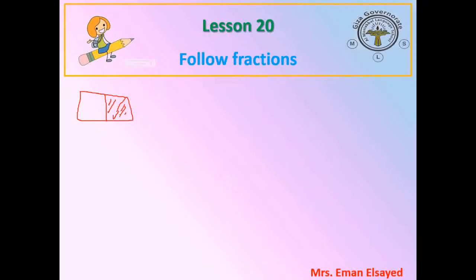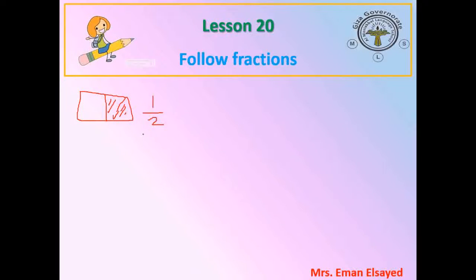What is the fraction of the shaded part? What is the shaded part? One out of two. How many parts? One and two. The total part is two down. The fraction is half — one out of two.